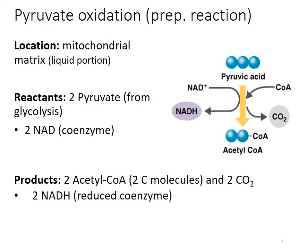If oxygen is available, we go on to pyruvate oxidation, also called the prep reaction. This happens in the mitochondrial matrix, which is the liquid portion of the mitochondria. The reactants are 2 pyruvate produced in glycolysis and 2 NAD, which is a coenzyme and electron carrier. This produces 2 acetyl coenzyme A — two-carbon molecules — plus 2 carbon dioxide, and the NAD is reduced to give us 2 NADH.